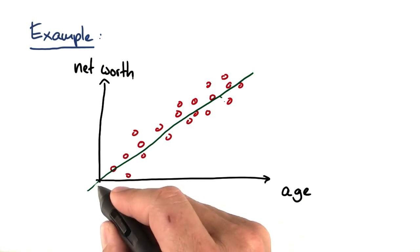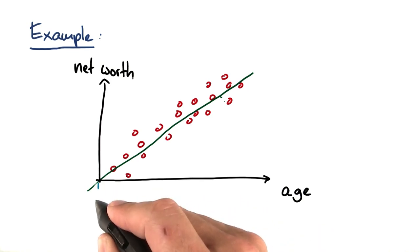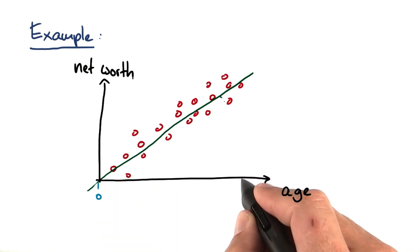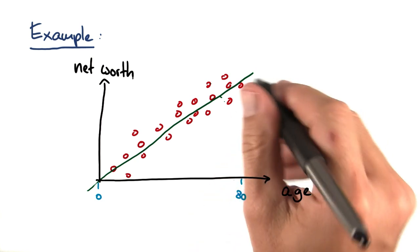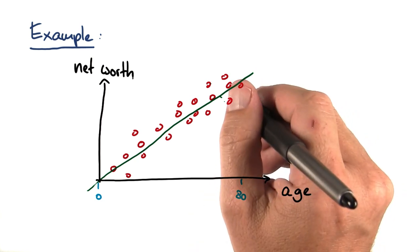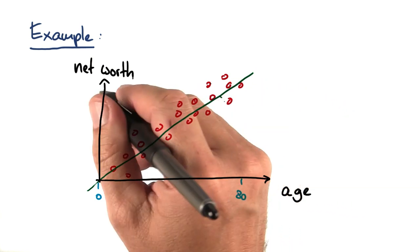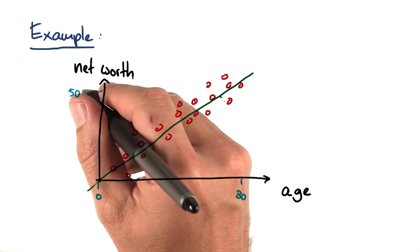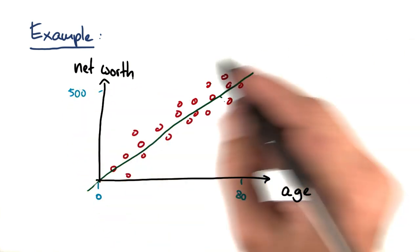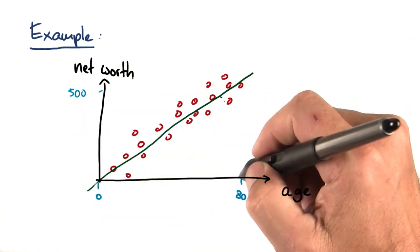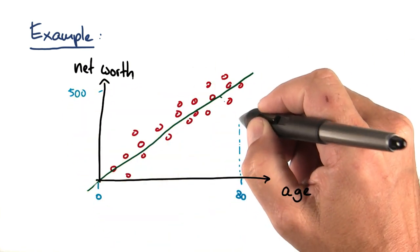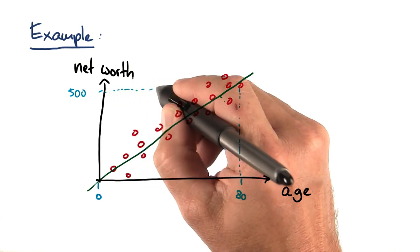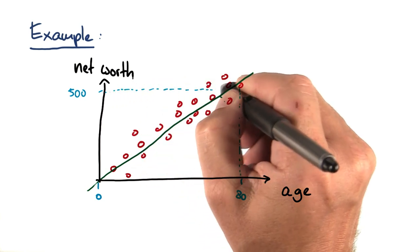Let me add numbers to this diagram over here. Say the age ranges from 0 to 80, and your net worth might be 500 at its best. So if you were 80 years old, your net worth would be exactly 500.